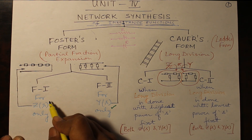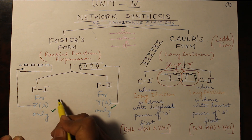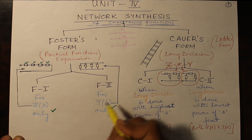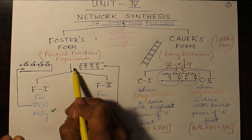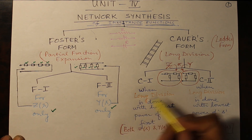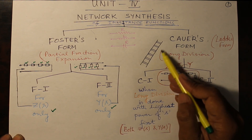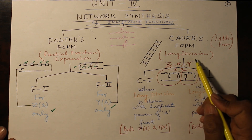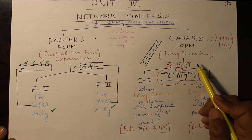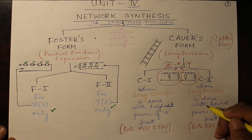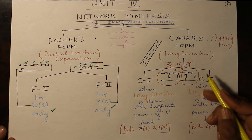Impedance is equal to the sum of impedances when connected in series, so you will have a series arrangement. Admittance is equal to the sum of admittances in parallel, so you will have a parallel arrangement. Coming to Cauer's form, it is known as the ladder form and is done by the long division method. In long division, the remainder becomes the divisor and we continue the process until the remainder is zero.